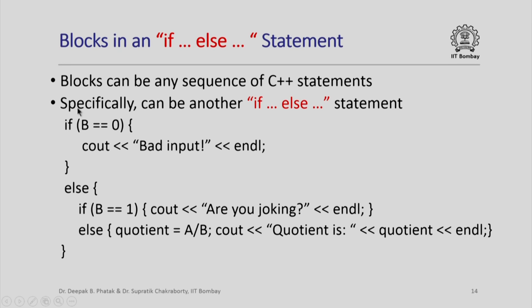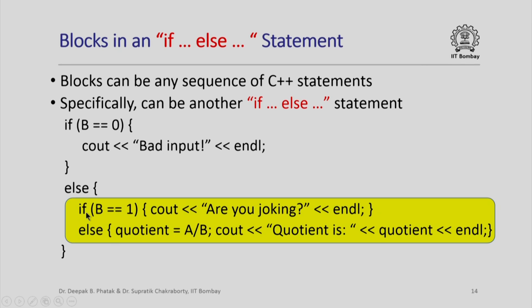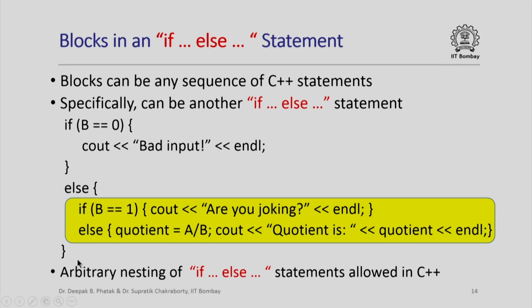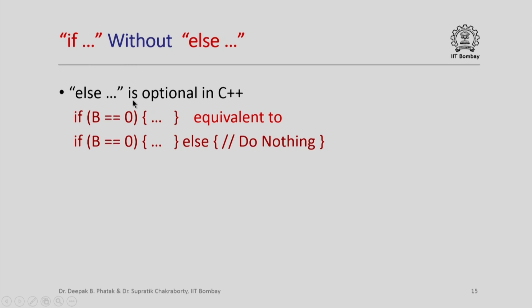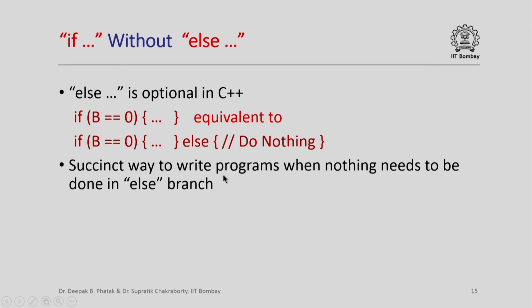The blocks in an if-else statement could be any sequence of C++ statements, and in fact they could be another if-else statement itself. For example, if b is 0 then one statement executes; otherwise, another if-else statement executes. C++ allows arbitrary nesting of if-else statements, by means of which you can write programs with fairly complicated control flow. C++ also allows writing if without the else — the else is optional — and this is equivalent to an if with an else branch that does nothing, a succinct way to write programs when nothing needs to be done in the else branch.